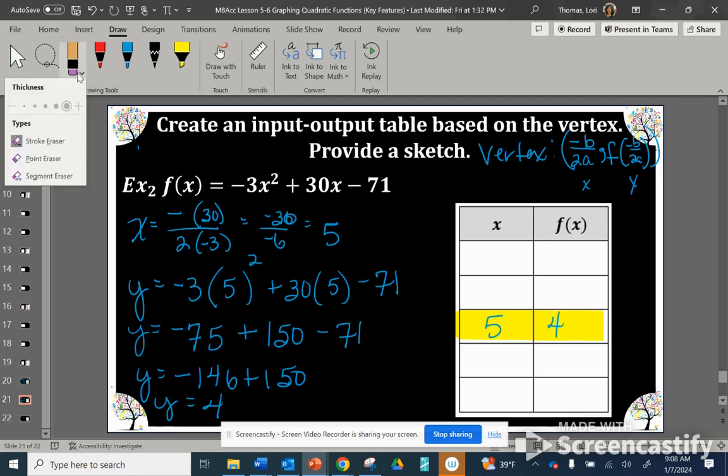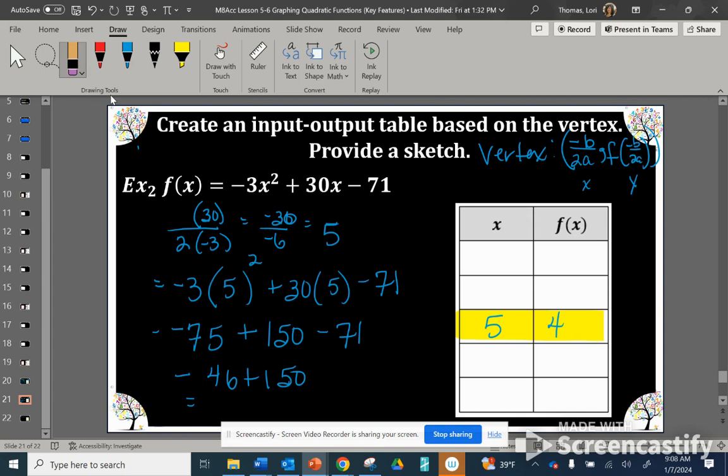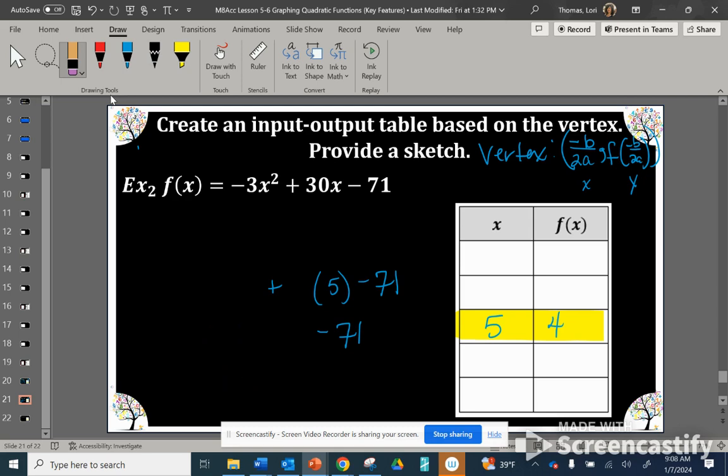That is our vertex. We want 2 points to the left and 2 points to the right. I prefer 5 points to create a parabola. Three is sufficient, but 5 is better. The more points, the more accurate and the more clearly you can see your graph.